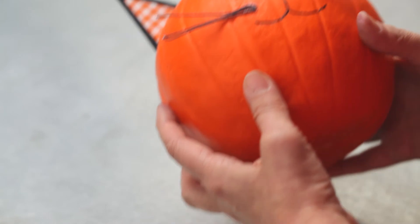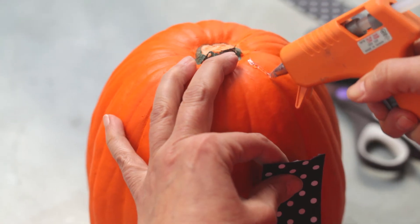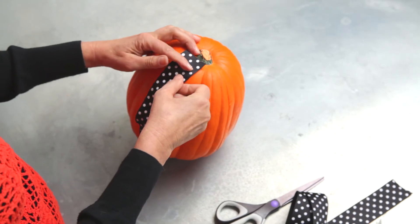Now you can set aside the head and start working on the body. Cut the stem off the pumpkin. Glue a piece of the wider ribbon down the front of the pumpkin and glue on the buttons.